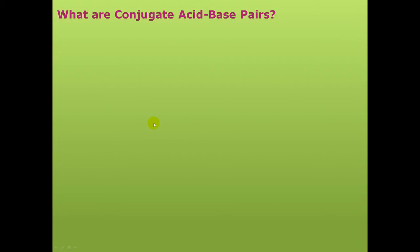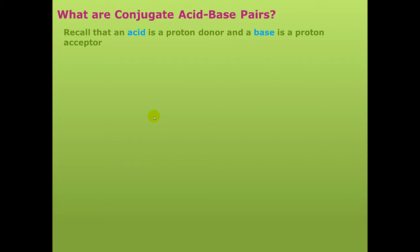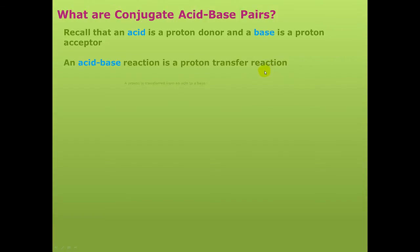So what are conjugate acid-base pairs? Recall that an acid is a proton donor, and a base is a proton acceptor. An acid-base reaction is simply a proton transfer reaction — a proton is transferred from an acid to a base.